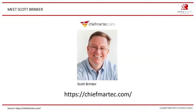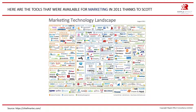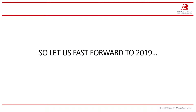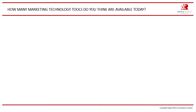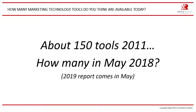Thanks to people like Scott Brinker, who has helpfully collected a lot of tools — you should definitely check out his website. We know today there are a lot of tools we can use for sales and marketing. Scott has done something very interesting: he has kept track of the tools available for marketing since 2011. This was his marketing technology landscape in August 2011 — there were about 150 tools listed, some cloud-based but many installed locally on a PC or server. Fast forward to 2019: how many marketing technology tools do you think are available today? The reports are often released in May each year, so when you see this video you may head over to Scott's website and check the 2019 report.